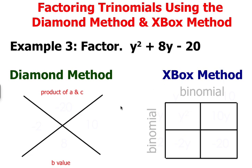Go ahead and set up your diamond method, draw an x. At the top you're going to find the product of the a and c value. 1 times negative 20 gives you a value of negative 20.